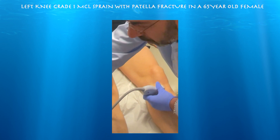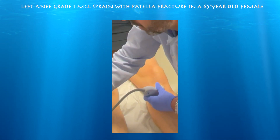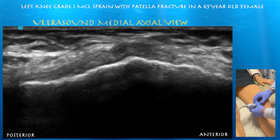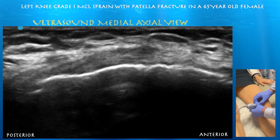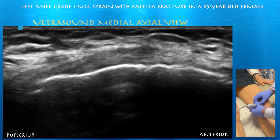Now we're going to go ahead and look at it in short axis. A little bit of hypoechogenicity, a little bit of thickening. Here you can see a little bit of hypoechogenicity on the superficial aspect of the superficial MCL, consistent with a low-grade sprain.